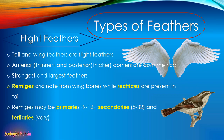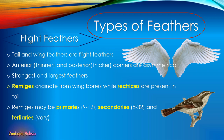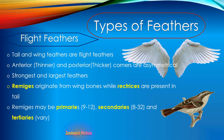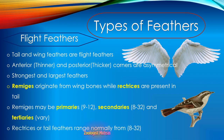Remiges may be primaries, secondaries, or tertiaries. Primaries may range from 9 to 12 in number. Primaries are the feathers closest to the body; as we move away from the body along the wing, we have secondaries and then tertiaries. Secondaries may vary from 8 to 32 in number, while tertiaries vary across different species. Rectrices or tail feathers normally range from 8 to 32. These numbers are very important to remember for exams.